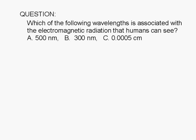Which of the following wavelengths is associated with the electromagnetic radiation that humans can see? A. 500 nanometers, B. 300 nanometers, or C. 0.0005 centimeters.